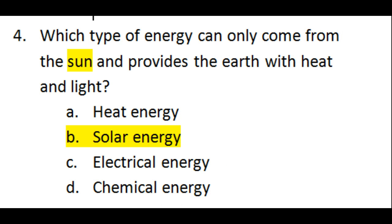Question number four says, which type of energy can only come from the sun and provides the earth with heat and light? It has to be solar energy. Just look, we've got a clue. The sun starts with an S and solar starts with an S and the sun provides us with heat and light. And that's solar energy.